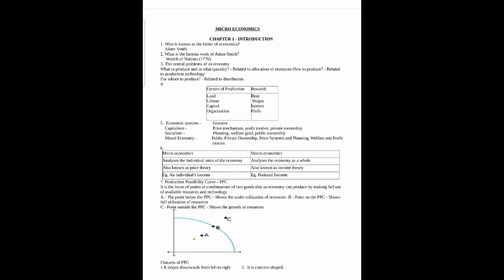We are looking at the central problems of an economy: what to produce and in what quantities, how to produce, and for whom to produce. We are also looking at the problem of maximum and effective utilization of resources. For a 3-mark question, these are the minimum points required. If the question asks for maximum, the three-mark answer is full.